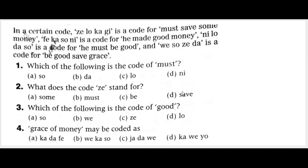Now, in a certain code, 'zi lo ka gi' is coded for 'must have some money.' 'fe ka so ni' is a code for 'he made good money.' 'ni lo da so' is a code for 'he must be good.' 'be so zi da' is a code for 'be good save grace.'